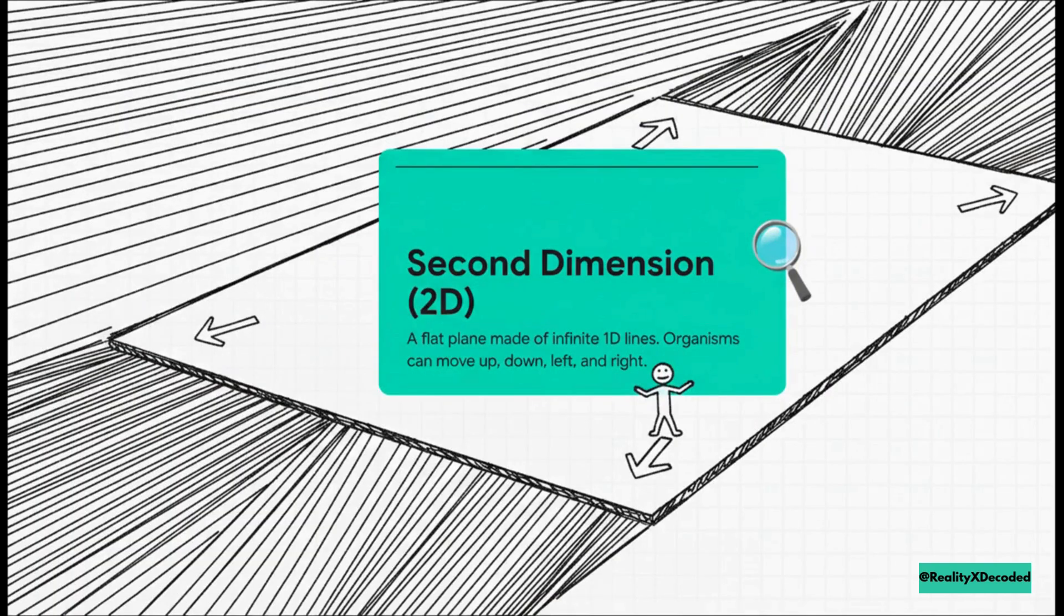Now, what happens if you take an infinite number of those 1D lines and you stack them side by side? Well, you get a flat plane, the second dimension. You can think of it like a sheet of paper. It has length and width, so a creature here can move up, down, left, and right. But, and this is key, it has zero depth. It's a completely flat world.